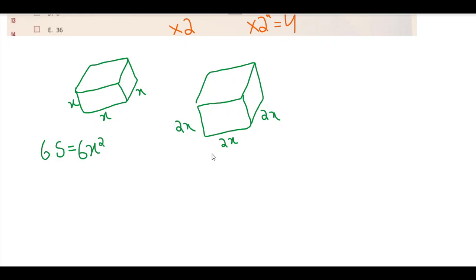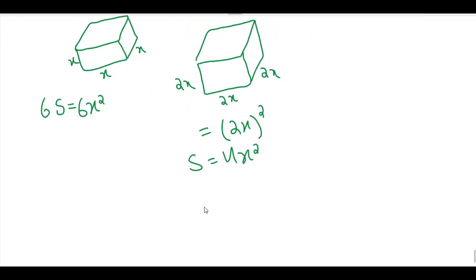And over here, the second which is basically increased, is going to be, so one side is basically 2x squared, which is basically 4x squared. But if I'm talking about six sides, six times four is 24x squared.